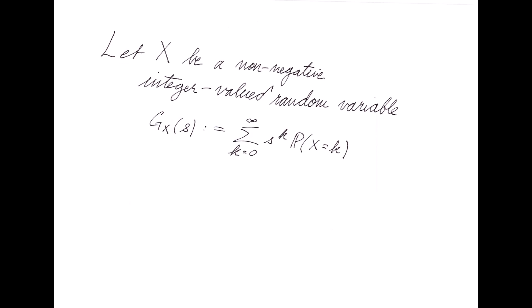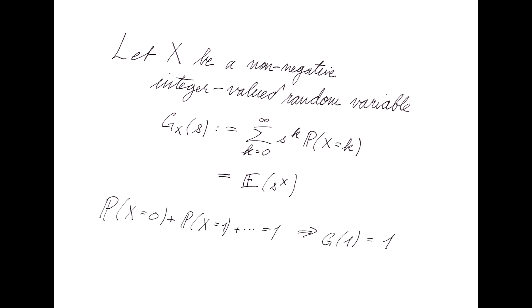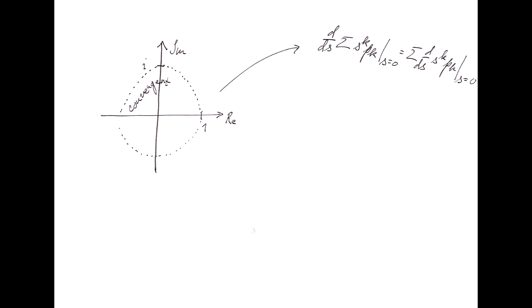It's not hard to see that we can rewrite this as the expectation of s to the X. Note that by the assumption that X is a random variable, we have g of 1 equals 1, so that by theorems of analysis, we have that the radius of convergence of this power series is at least 1. In particular, we have that g is differentiable term by term infinitely many times within the disk of radius 1 around the origin.